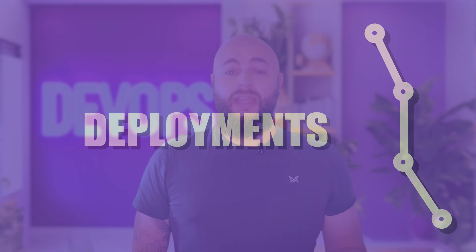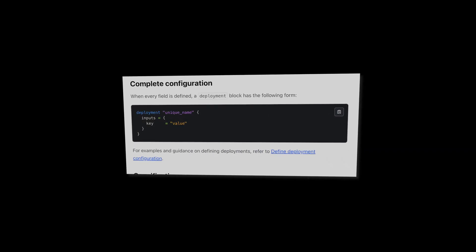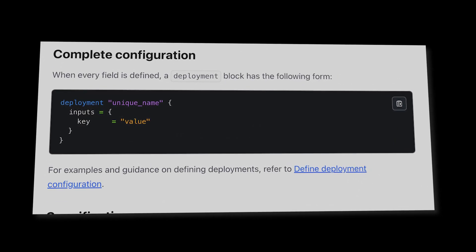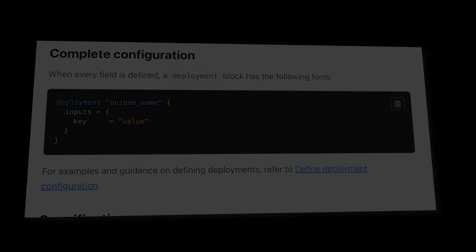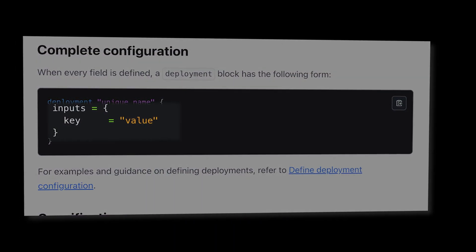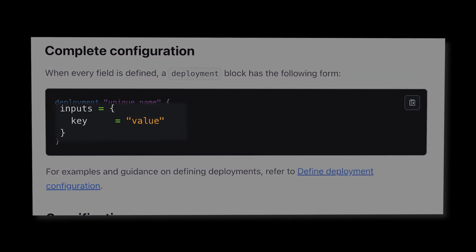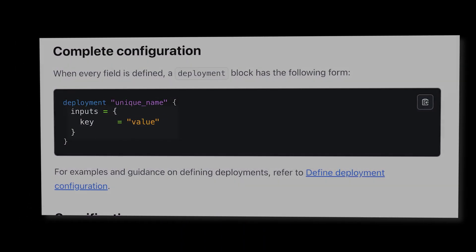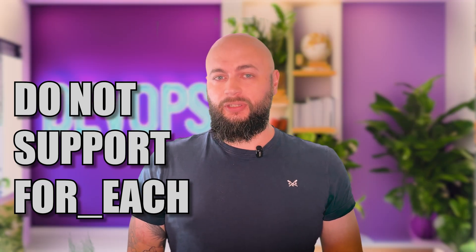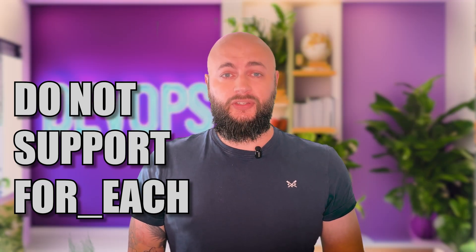Each deployment block defined in a tf.deploy.hcl file deploys all components. Components receive values for their variables from the inputs block in the deployment. Inputs are the only arguments supported in deployments, and they do not support the foreach argument. Deployments must have their own blocks.